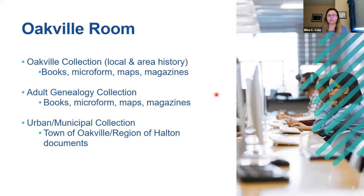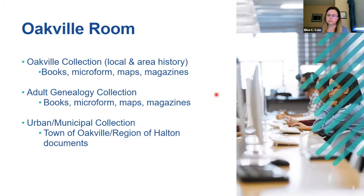Within the Oakville Room there are three distinct collections. The Oakville collection offers both reference items that can be consulted in person as well as circulating items you can check out, with multiple copies or copies at other branch locations. Next we have the genealogy collection, made up of both reference and circulating items in a variety of formats. Finally we have the urban municipal collection, made up of documents created by local government and organizations. Some overlap between collections exists — for example, some heritage reports moved from urban municipal to the Oakville collection, and the same happens with genealogical resources specific to Oakville, Trafalgar, and Halton.